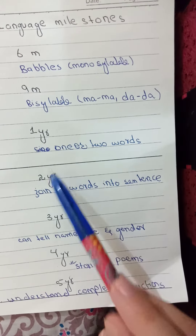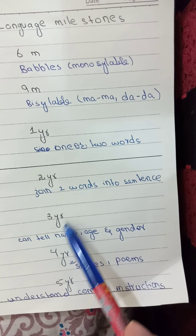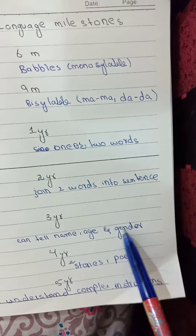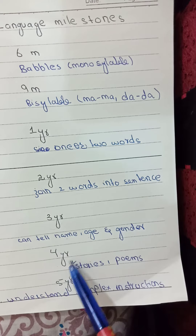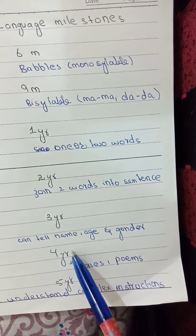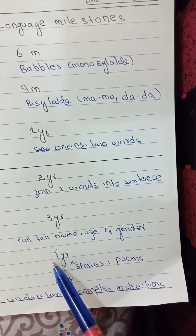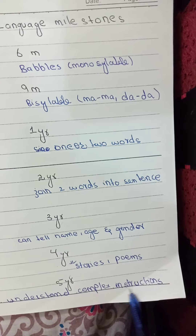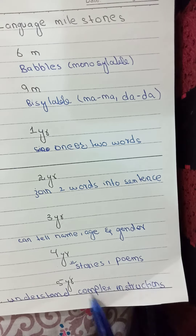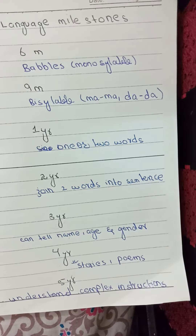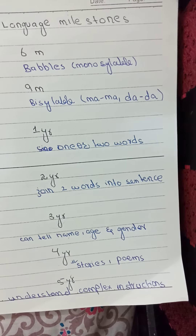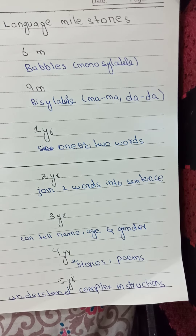At three years, he can tell his name, age, and gender. At four years, narration starts — he can narrate stories and poems. At five years, he begins to understand complex instructions. That was all about language milestones.